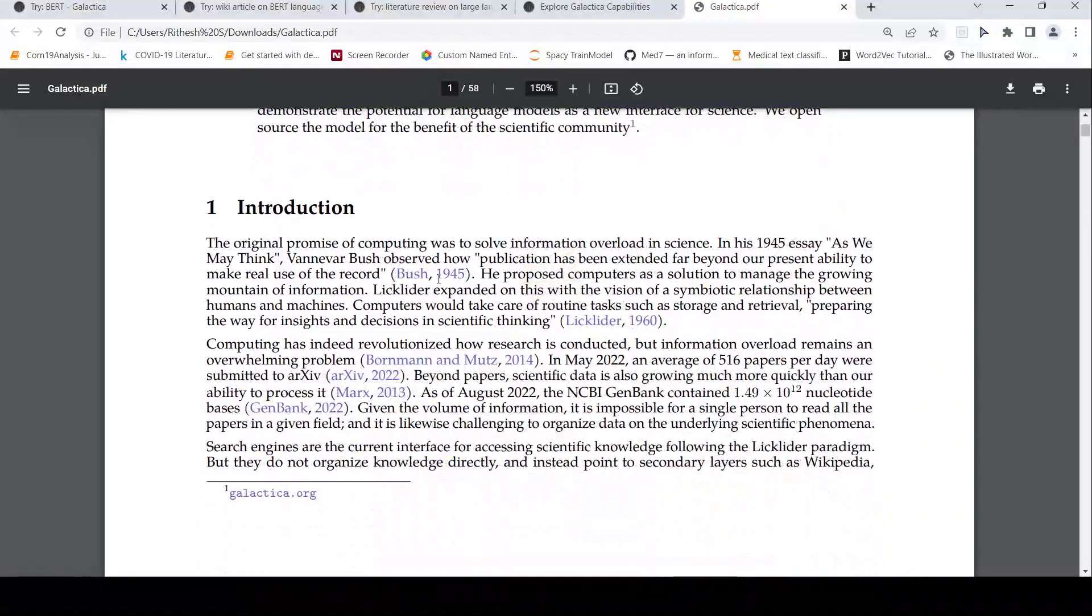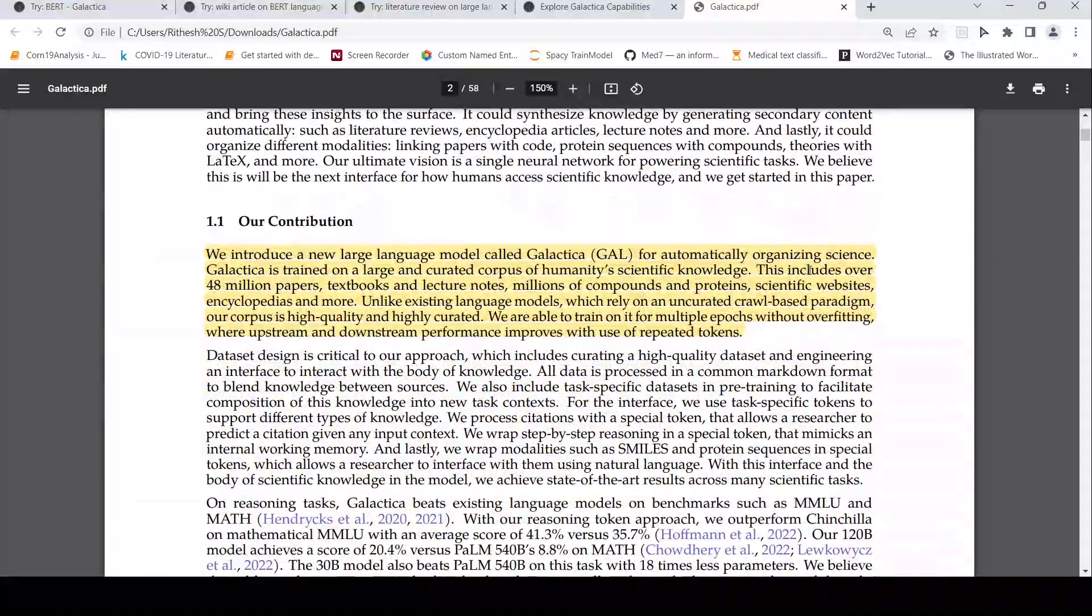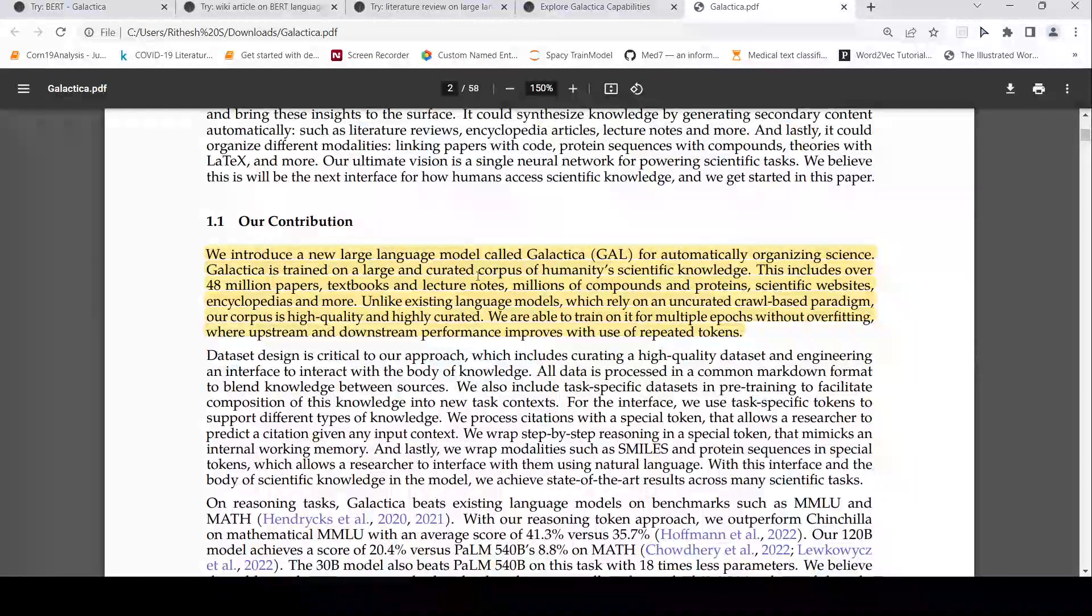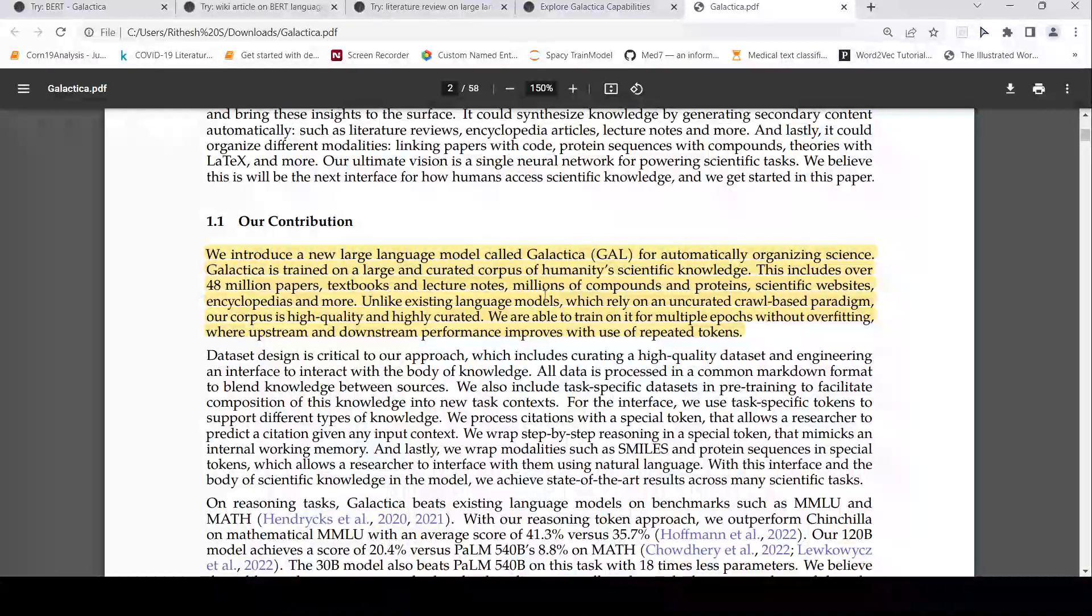They say that this model actually outperforms GPT-3 or any of the other large language models by a huge margin. So what was this model trained on? It was trained on a large and curated corpus of humanity's scientific knowledge, includes over 48 million papers, textbooks and lecture notes, millions of compounds and proteins, scientific websites, encyclopedias and more.